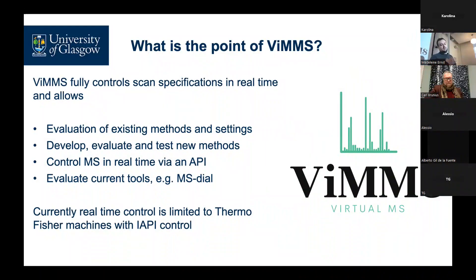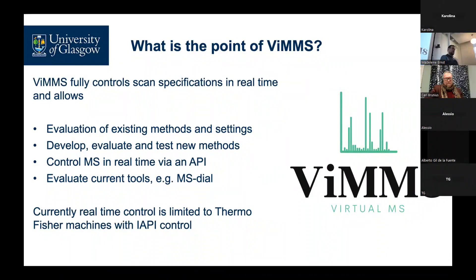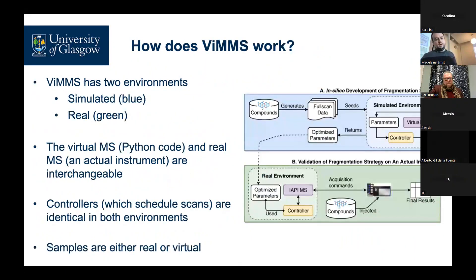We do have the ability to use VIMS to control a mass spec — we have API access through some of the Thermo Fisher machines, though it's limited to those at the minute. That does allow us to actually test these methods on real samples as well as virtual ones. Finally, I think the thing it's most useful for in the immediate future is evaluating existing tools and methods — MS-DIAL is one we're interested in looking at.